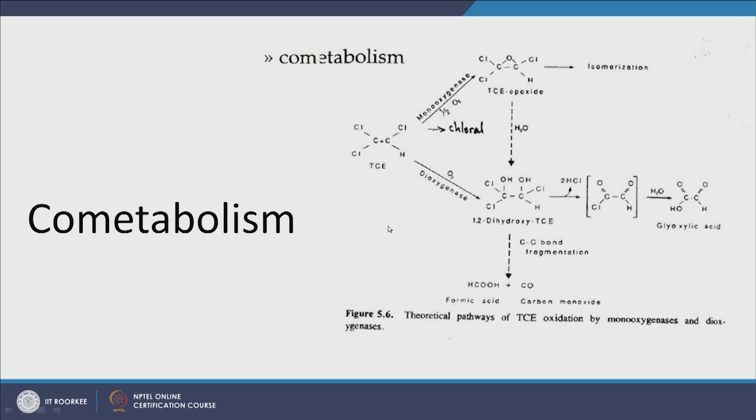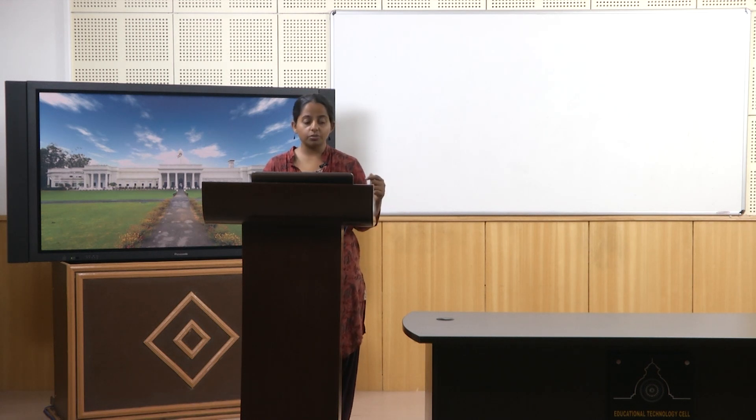Co-metabolism was discussed earlier in the context of uranium: because uranium reduction is not energetically favorable, iron-reducing microbes use their non-specific iron-reducing enzymes to also reduce uranium — this is co-reduction. Similarly, compounds that microbes prefer not to degrade can be co-metabolized if we add an electron donor or acceptor that microbes can utilize; the non-specific enzymes then also transform the original contaminant.